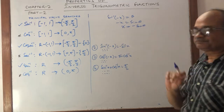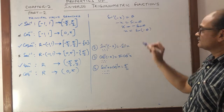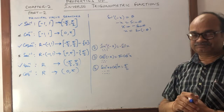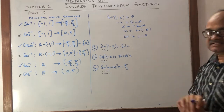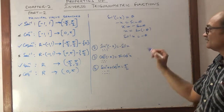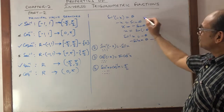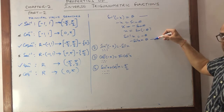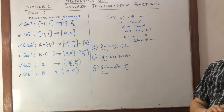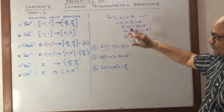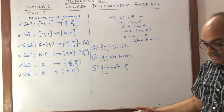From class 11, -sin θ = sin(-θ), so x = sin(-θ), which gives sin⁻¹(x) = -θ. Therefore θ = -sin⁻¹(x). Since we started with θ = sin⁻¹(-x), we conclude sin⁻¹(-x) = -sin⁻¹(x). This proof is valid for the first group: sin⁻¹, csc⁻¹, and tan⁻¹.